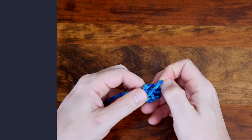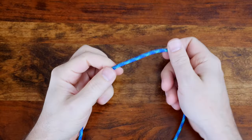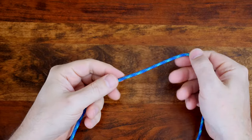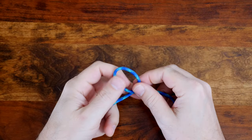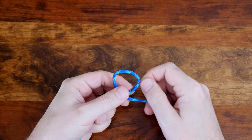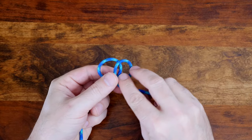Now let's have a look at how to tie the Celtic Button Knot. To begin, first make a loop with your working end, then make another loop on top of the first loop.